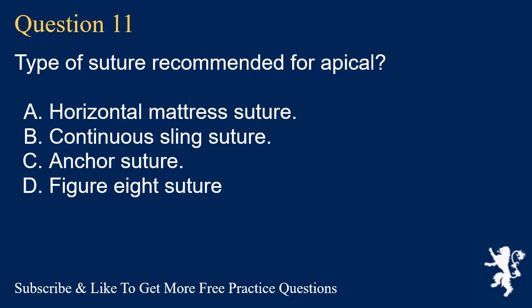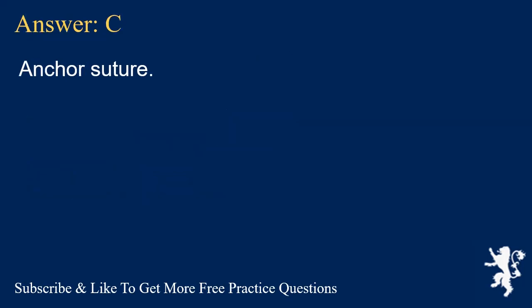Question 11. Type of suture recommended for apical? A. Horizontal mattress suture. B. Continuous sling suture. C. Anchor suture. D. Figure 8 suture. Answer: C. Anchor suture.